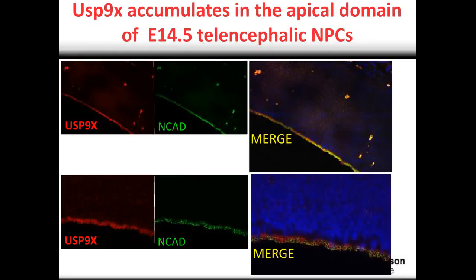One of the first things we did was look at the protein localization of USP9X in the developing brain — this is a cross-section through the cortex. We found that USP9X was highly enriched right at the ventricular surface, or the apical side, of the progenitor cells. This domain is shared by the cell adhesion protein N-cadherin, and this is the region of the developing brain where stem cells divide and make their decision of whether to self-renew or differentiate. This gave us a clue that USP9X might be regulating the cell fate of neuroprogenitor cells.